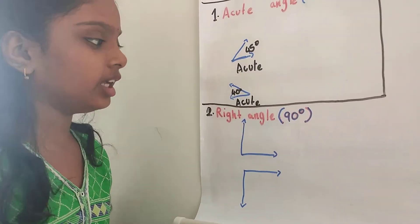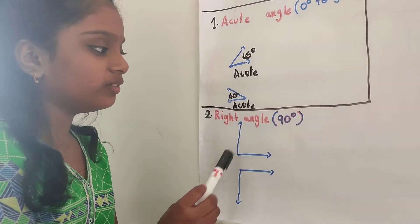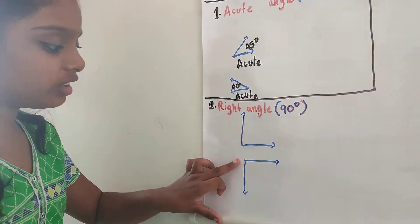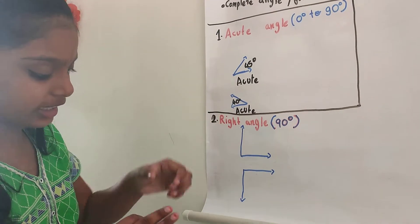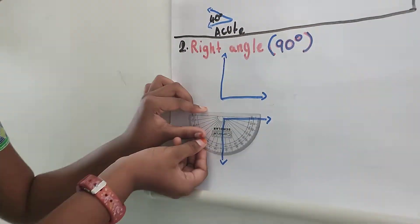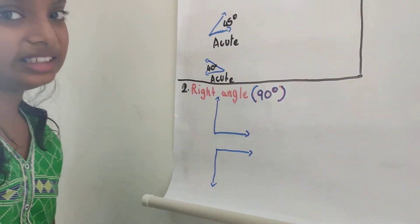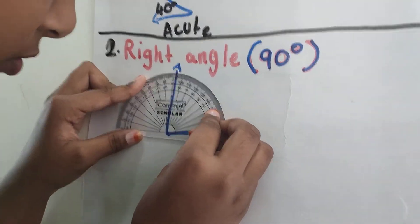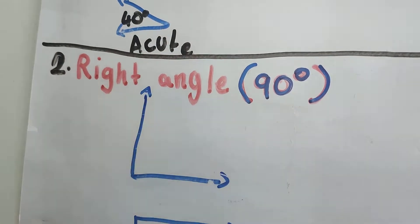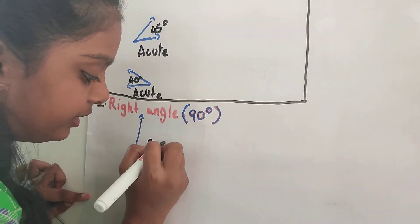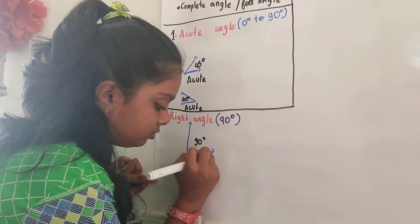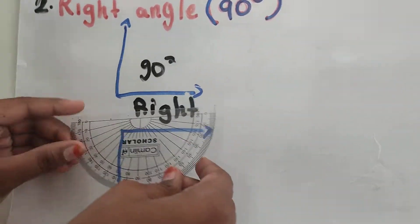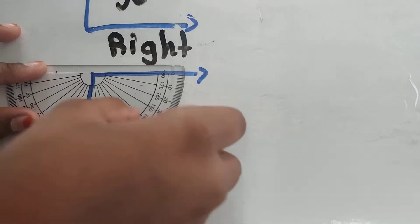Now, let us see the right angle. A right angle is the angle which is exactly 90 degrees. Whenever you have the angle like this, it is crossed like this, so I have to keep the protractor oppositely. Let us measure these two angles and see if they are right angles. This is a right angle because it is 90 degrees. Next, let us measure this one — this is also 90 degrees.